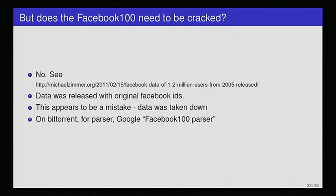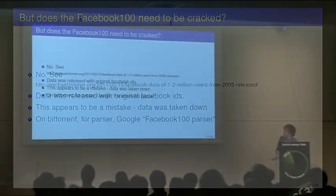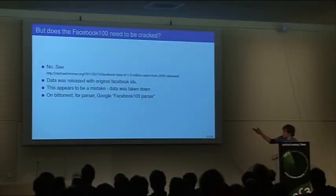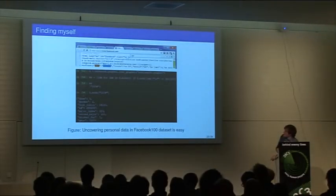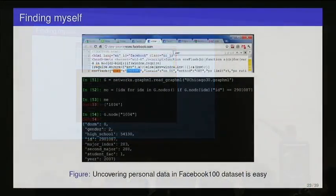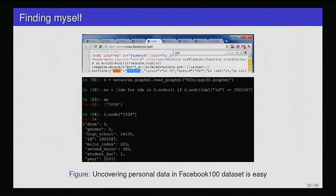The original Facebook IDs are still contained in the data set. If you're interested in downloading this data set, this one is on BitTorrent. I've also created a parser for it if you want to put it into any of a number of network formats. So here's how easy it was. This is how I found myself. I just went to Facebook, typed and searched the source code for user, and I found some number. It looks like a user ID. Went into the data set and sure enough there I was.